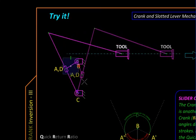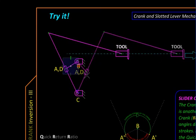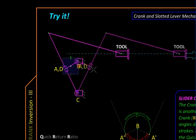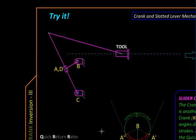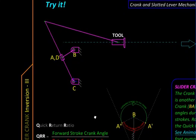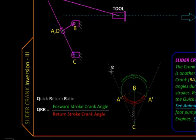And like inversion number two, we can get a quick return characteristic over here. The quick return ratio of this mechanism can be evaluated using the two extreme positions of the guide, which is usually a link with a slot in which the slider slides. And these two extreme positions are nothing but tangents to the circular path of the slider.